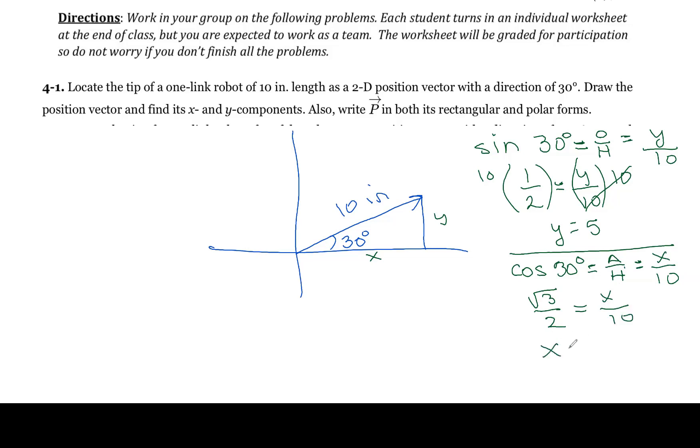So x is equal to, again, I'm going to multiply both sides by 10. I can cancel the 10 with the 2 and get a 5. So I get x is equal 5 times the square root of 3.